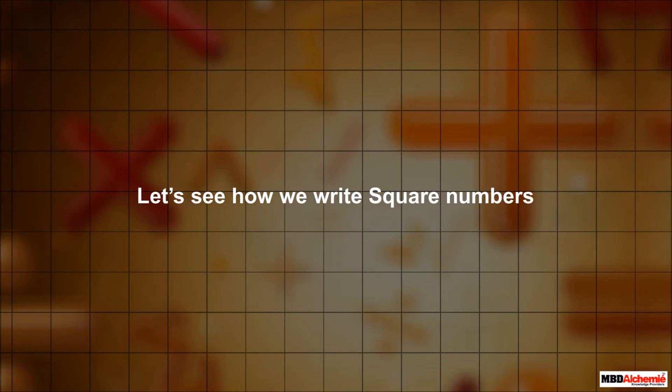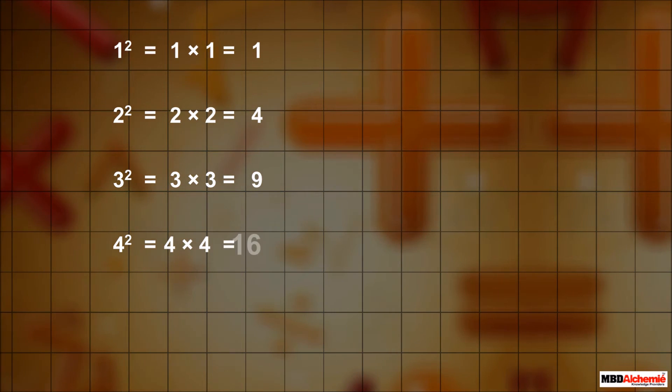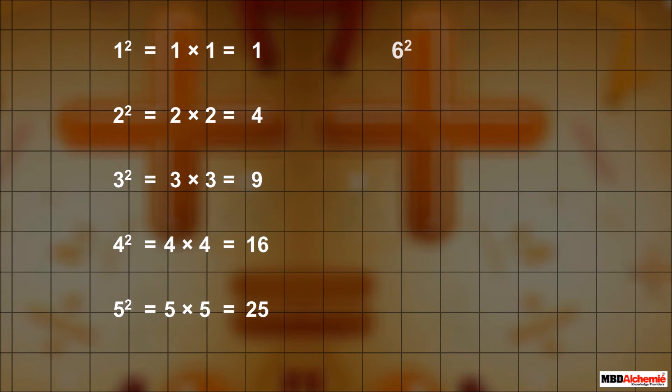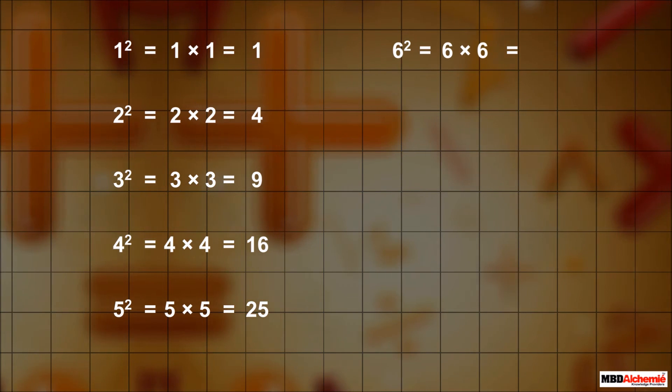Let's see how we write square numbers. The square of 1 is written as 1 into 1, which is equal to 1. The square of 2 is written as 2 into 2, which is equal to 4. The square of 3 is written as 3 into 3, which is equal to 9. The square of 4 is written as 4 into 4, which is equal to 16. The square of 5 is written as 5 into 5, which is equal to 25. The square of 6 is written as 6 into 6, which is equal to 36.